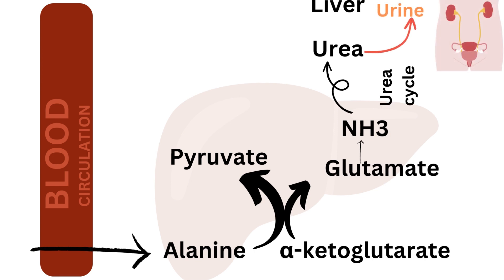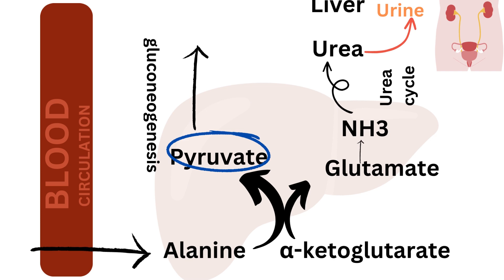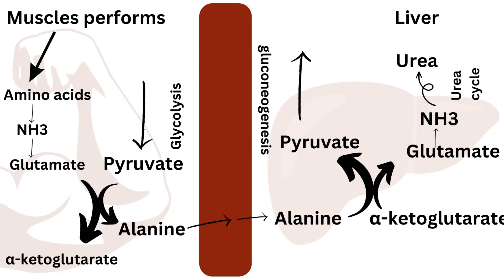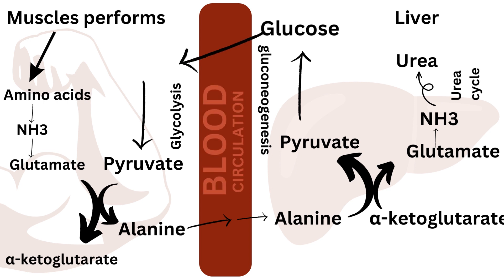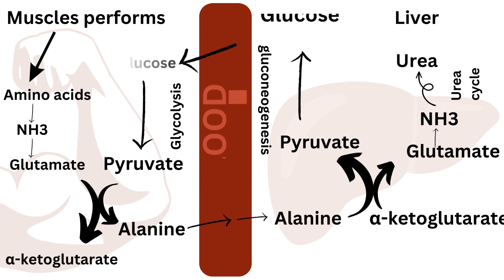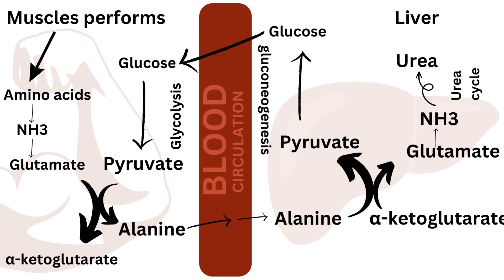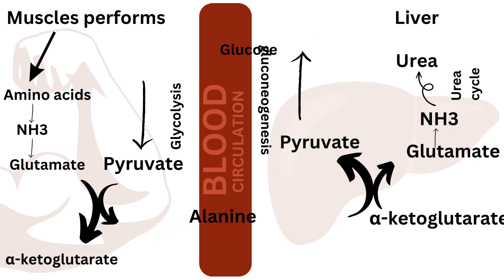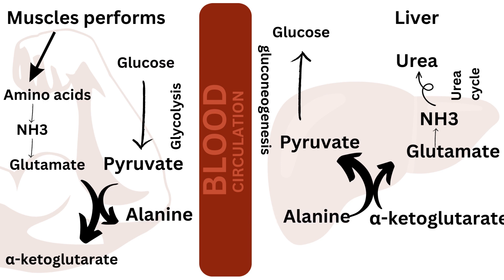On the other side, the liver performs gluconeogenesis — a process where it converts pyruvate and other non-carbohydrate sources into glucose. The newly formed glucose is released into the bloodstream and can be taken up by muscles. The glucose-alanine cycle is a continuous loop, ensuring the supply of glucose to muscles and the elimination of excess ammonia from the body. That's how excess nitrogen from amino acids is safely transported to the liver and eventually converted into urea for excretion.